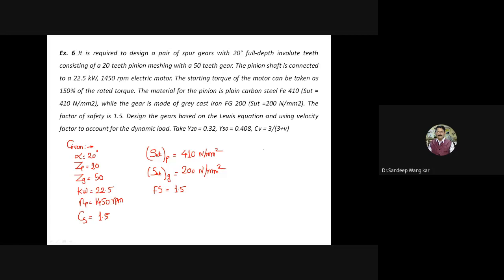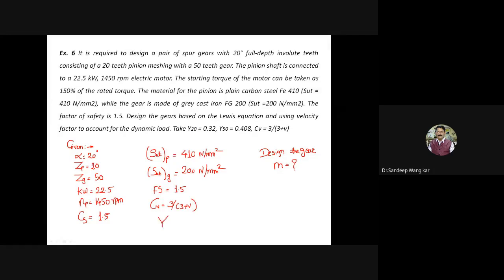BHN is not given, so we will calculate the module based on Lewis equation using velocity factor to account for dynamic load. CV = 3/(3+V). Velocity is not given; if required we will assume velocity as 5 m/s. Lewis form factor Y for 20 teeth = 0.32, and Y for 50 teeth = 0.408.